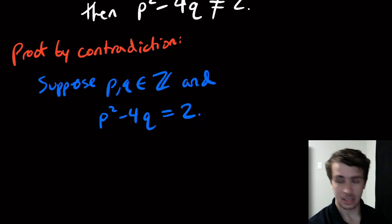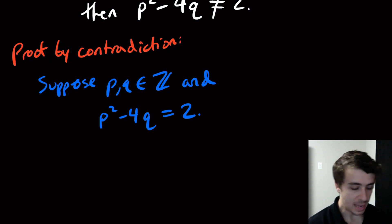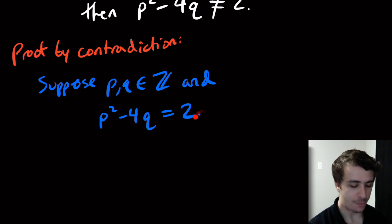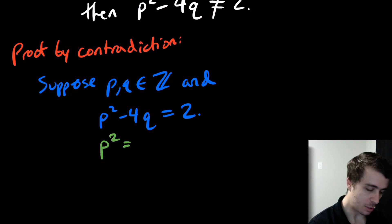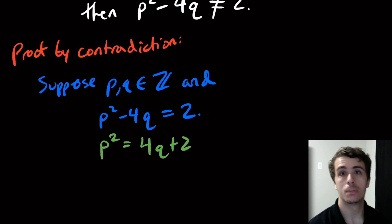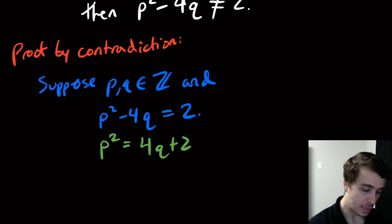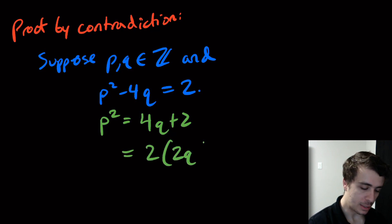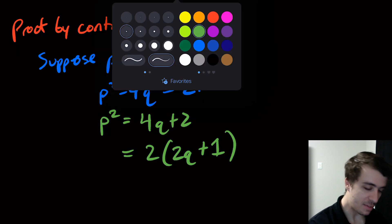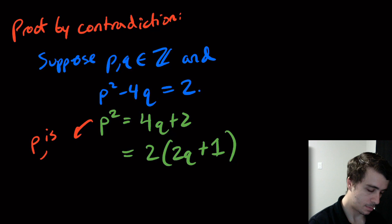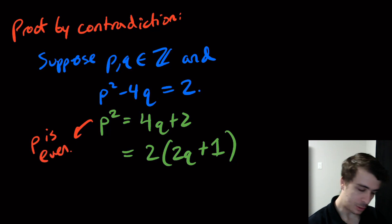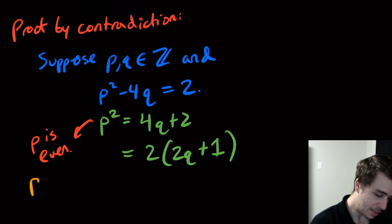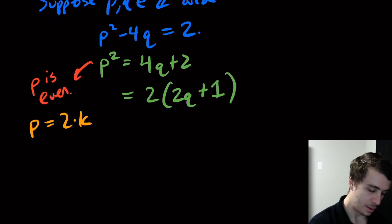What does that tell us? We have an equation, so let's play with it. Adding 4q to both sides gives p squared equals 4q plus 2. We can factor out a 2 to get p squared equals 2 times (2q plus 1). So p squared is even, which again implies that p is even. So let p equal 2k for some integer k.